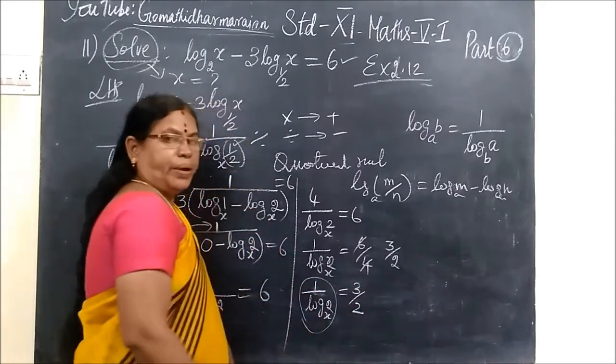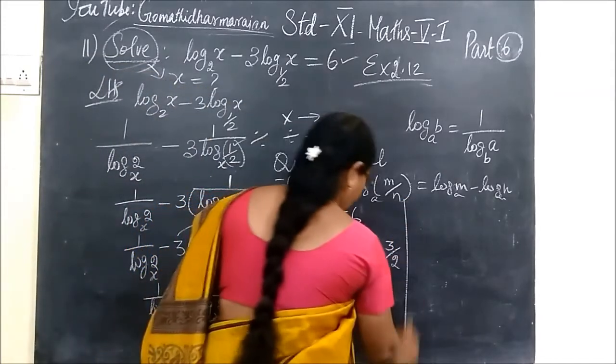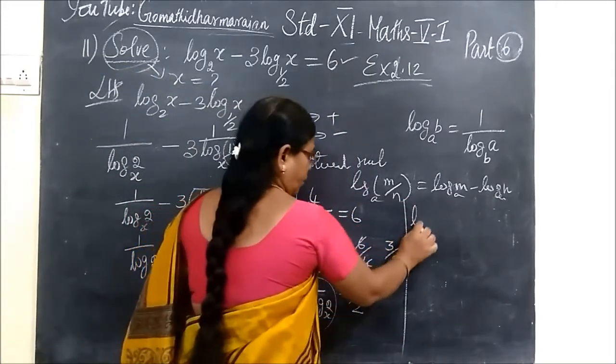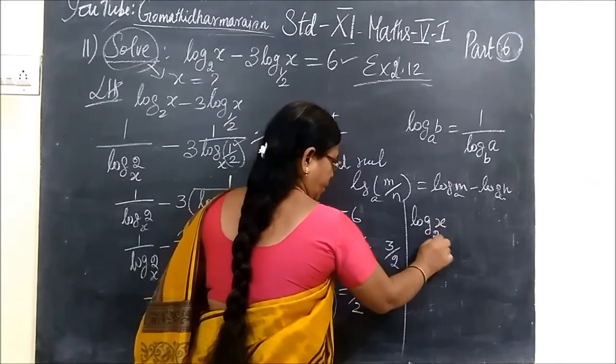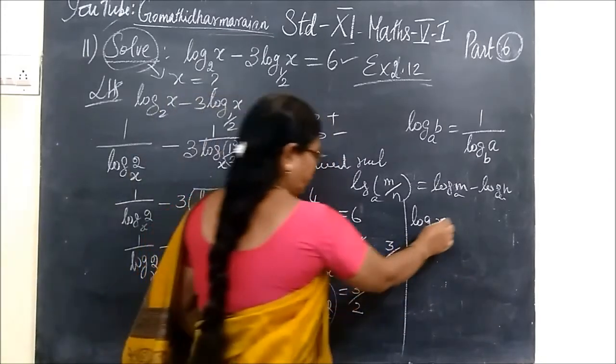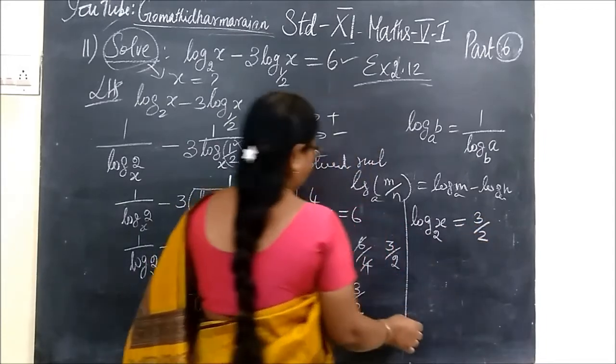Now again, we are applying change of base rule. So when you apply change of base rule, then again, log x will come here, the base will be 2. So this is equal to 3 by 2.